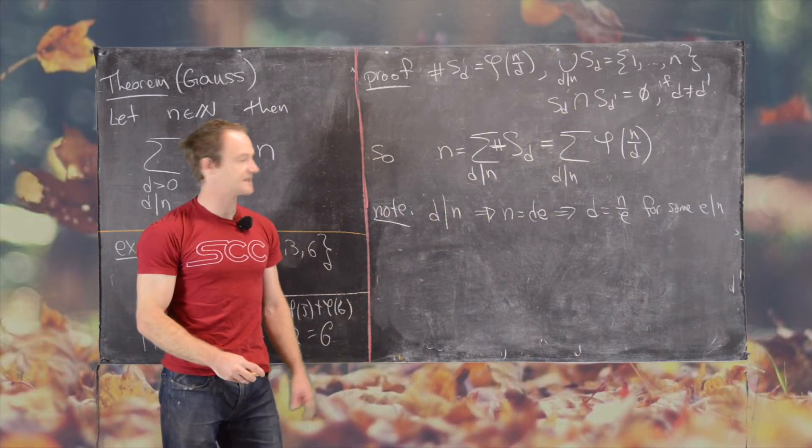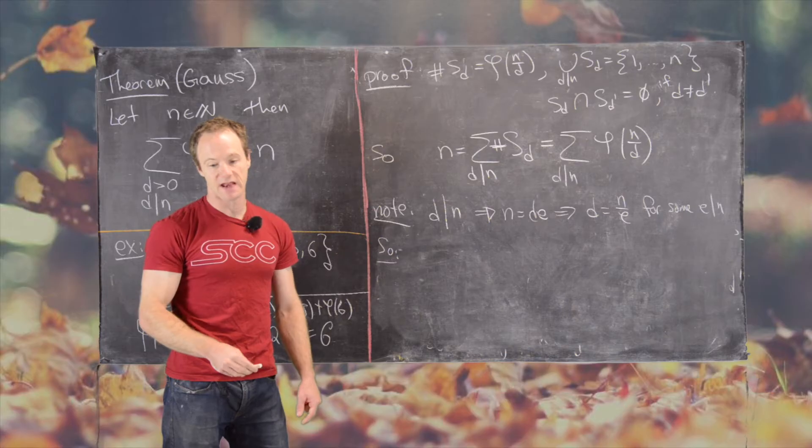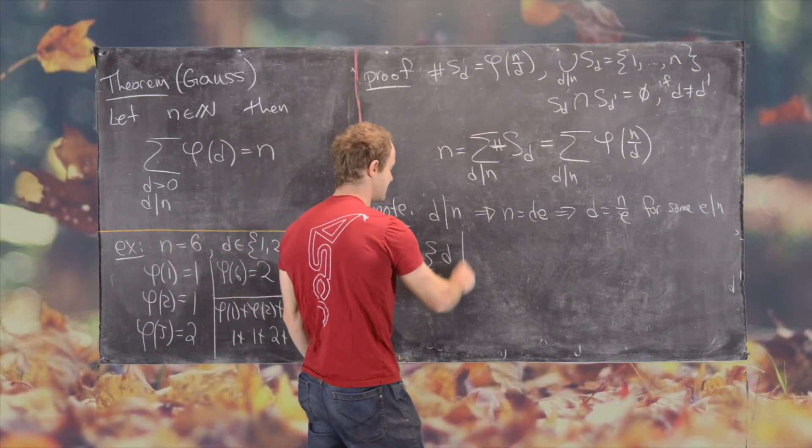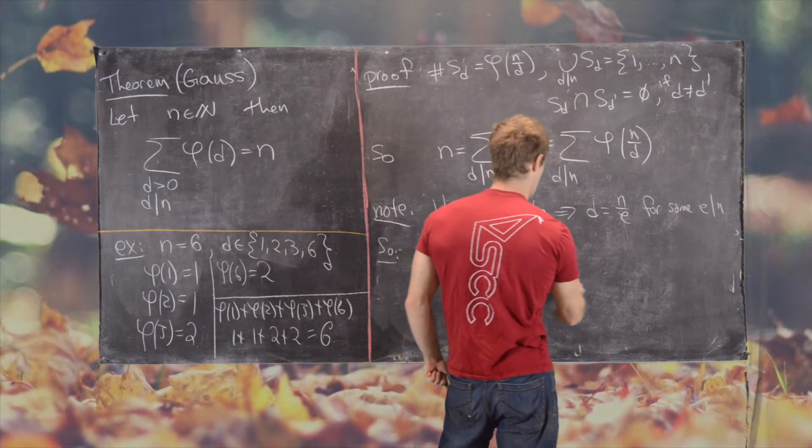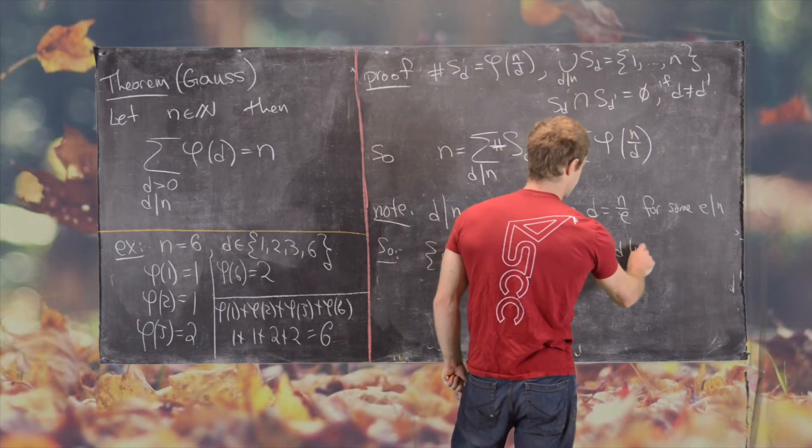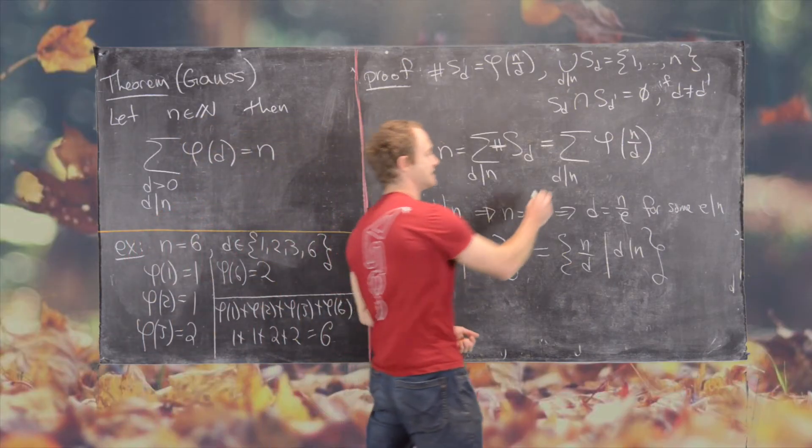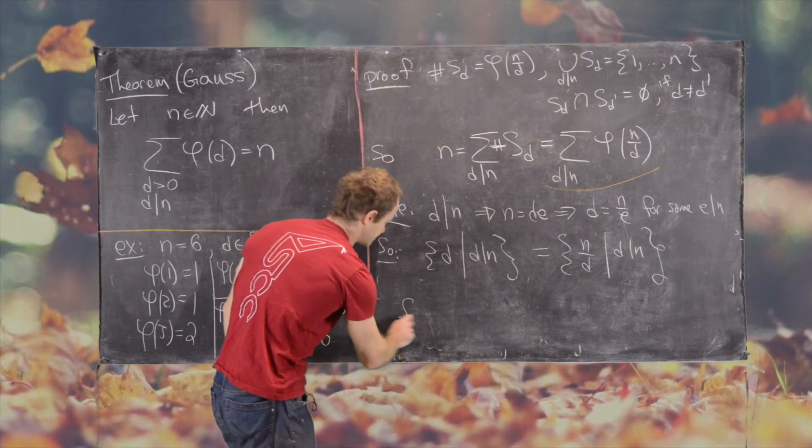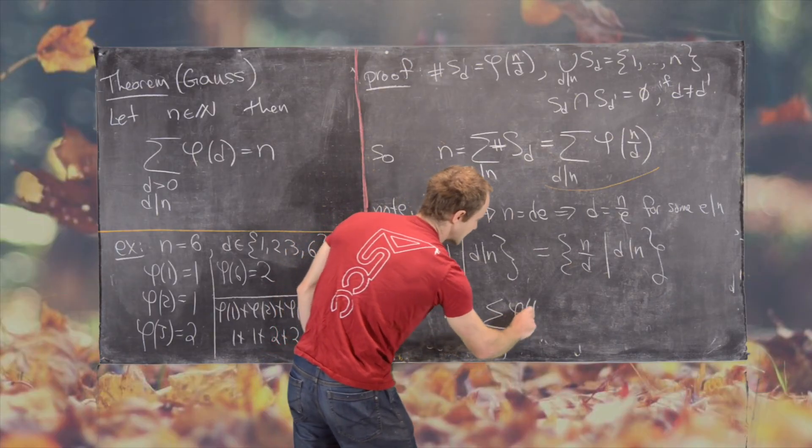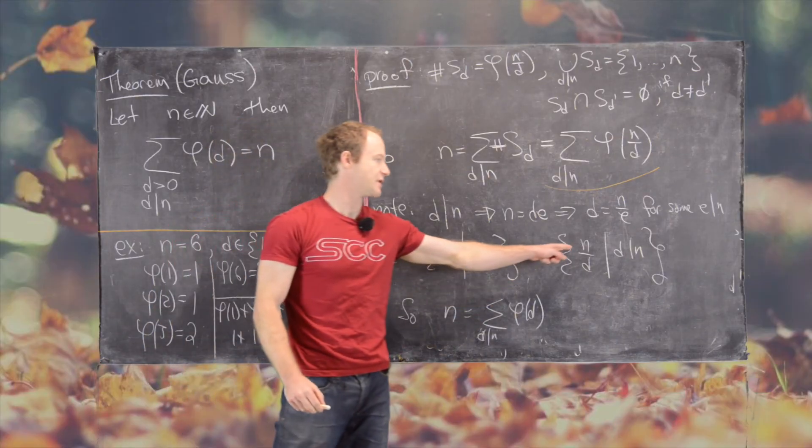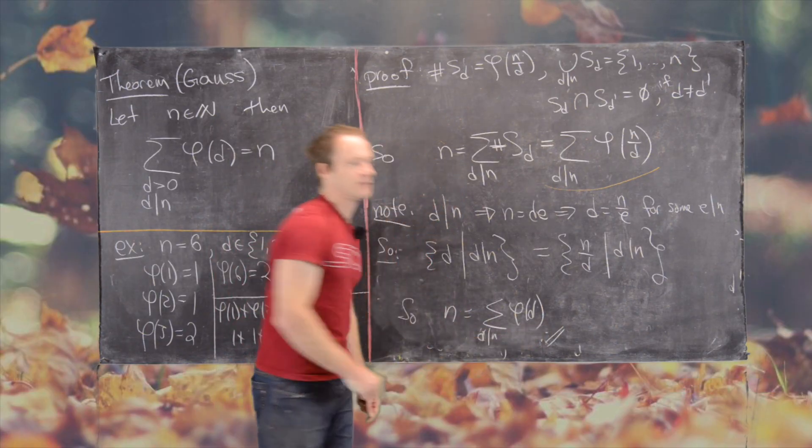So in other words, what this means is that these two sets are the same, and that is the set of all D such that D divides n is the same thing as the set of all n over D such that D divides n. And then this fact means that we can replace this sum with the following. So n equals the sum over all divisors of n of phi of D. So instead of summing over this set, we're summing over this set, but these two sets are the same. And so that finishes the proof.